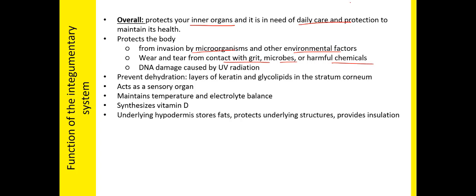The skin protects us from wear and tear with contact with grit, microbes, and harmful chemicals. So even if bleach or acid were to drop on our skin, it would hurt our skin but not the underlying structures. Our skin also protects us from UV damage — UV radiation from the sun — which causes damage to the DNA structure of cells within our skin.